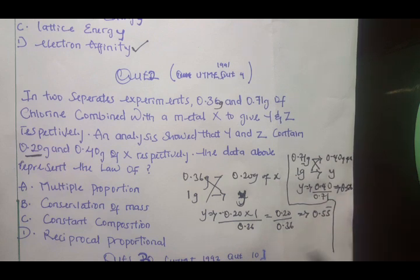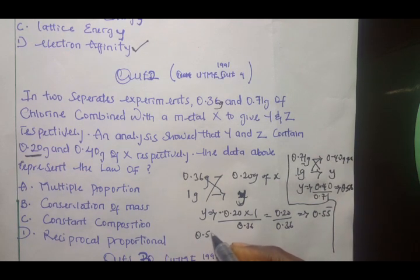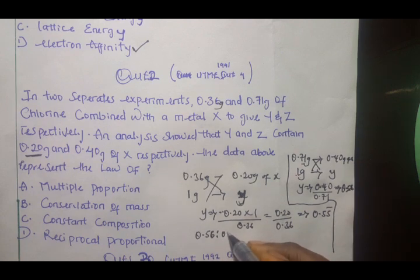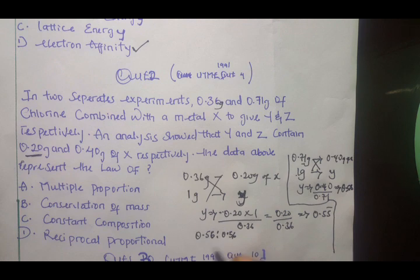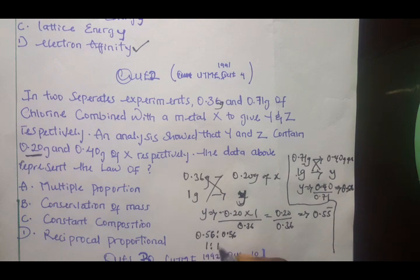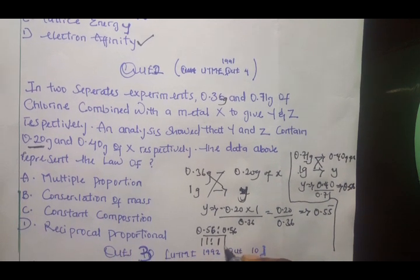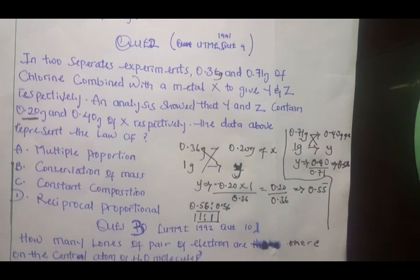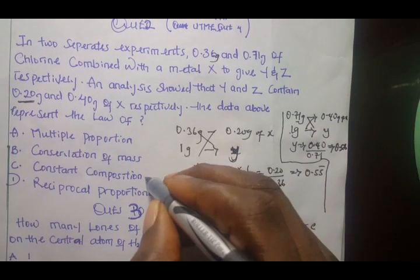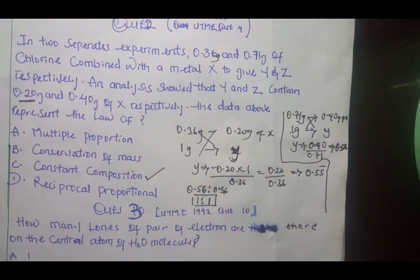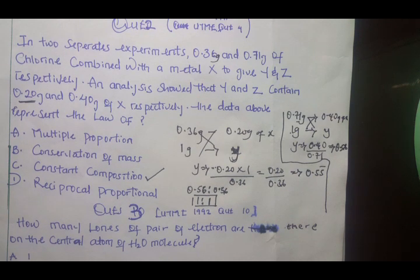Now from here we can set them to ratio: 0.55 repeating which is same as 0.56 ratio 0.56 will give us 1 ratio 1. And because they are in 1 ratio 1 we can talk about the law of constant composition.